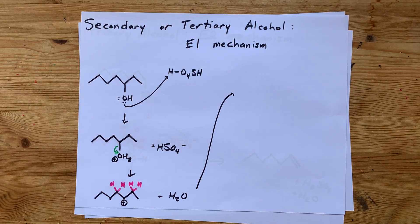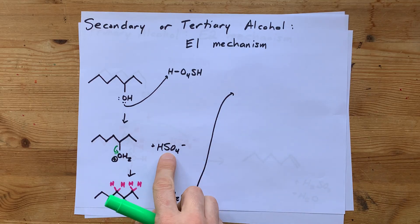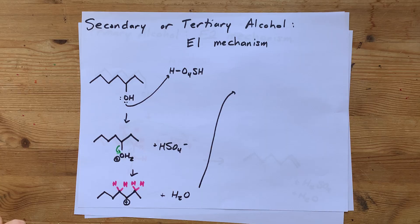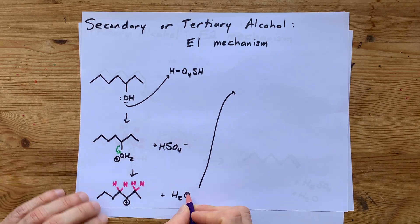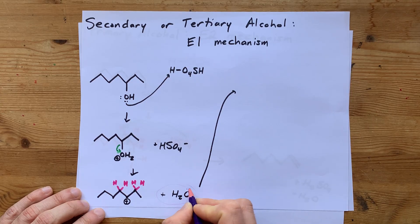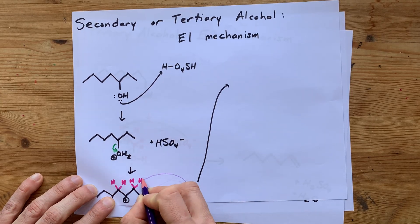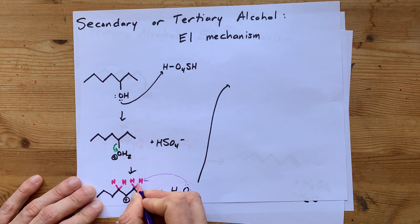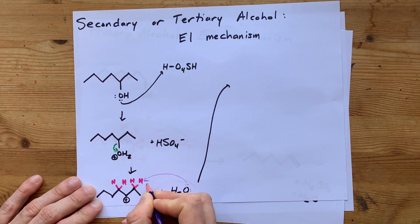Now, the H2O, or maybe we'll use the HSO4 here, something needs to steal this hydrogen away. I think I'm going to choose the water to make that happen. The water molecule is going to steal, let's say, that H away.